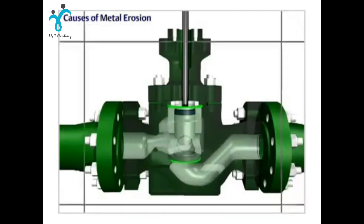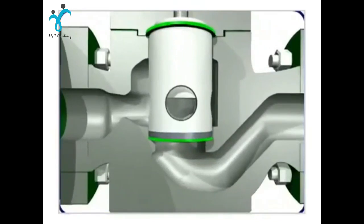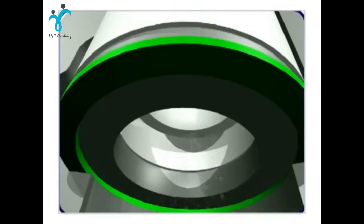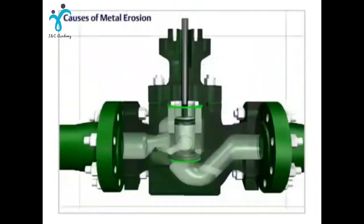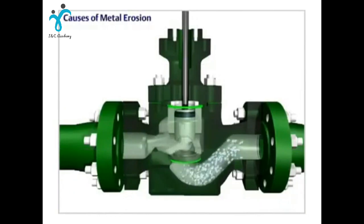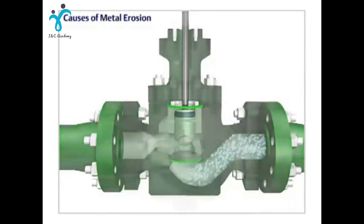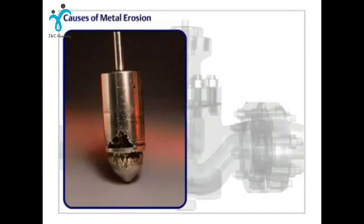Wherever there's a restriction in flow, the decrease in pressure can cause a fluid to reach its vapor point. Flashing occurs when the fluid vaporizes and remains a vapor. Metal erosion caused by flashing appears smooth and shiny.